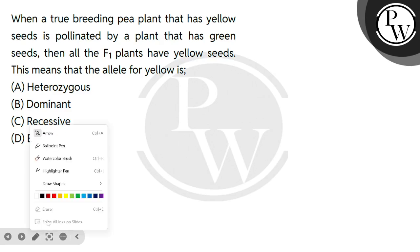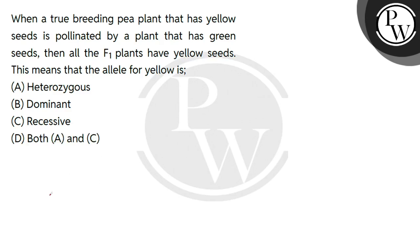Let's read the question first. The question says: when a true breeding plant that has yellow seed is pollinated by a plant that has green seed, then all the F1 plants have yellow seed. This means that the allele of yellow is — what? We are asked about a true breeding plant in which seeds are yellow.